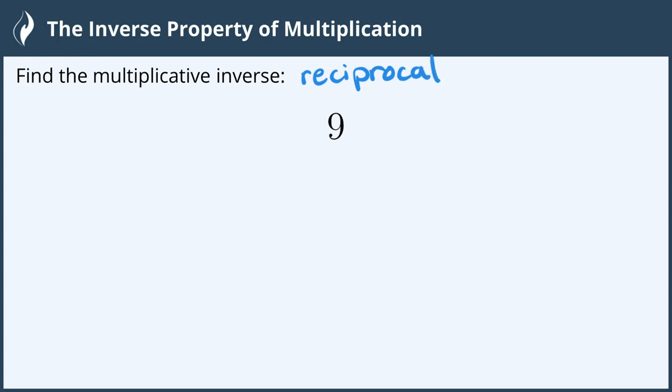To find the reciprocal of a whole number, we can make it a fraction by putting it over 1. Now we have a numerator and denominator, and we can switch these to find the reciprocal by putting the denominator into the numerator and the numerator into the denominator, making it 1 over 9. This is the multiplicative inverse.